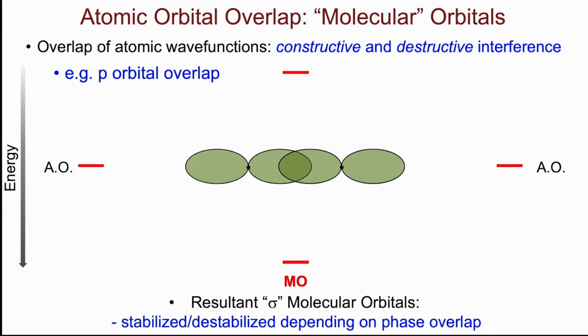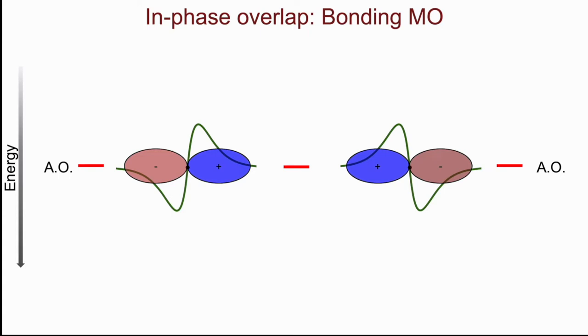Let's first look at in-phase overlap of two atomic orbitals, and the result will be what we call a bonding molecular orbital. So again, on the left and the right are my two p-orbitals that I'm using in this example.